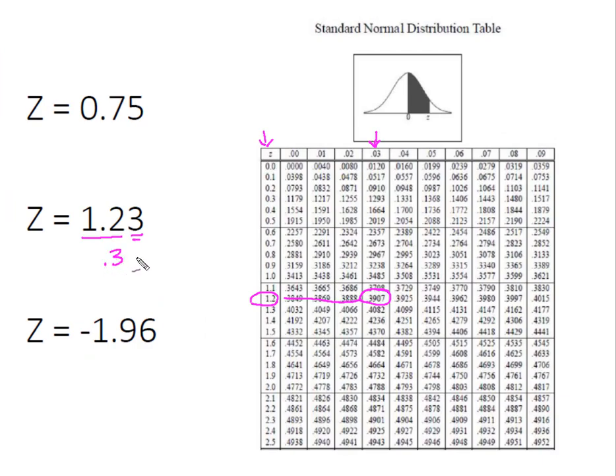I'll have 39.07% of my data located between the mean of the distribution and 1.23 standard deviations above the mean.